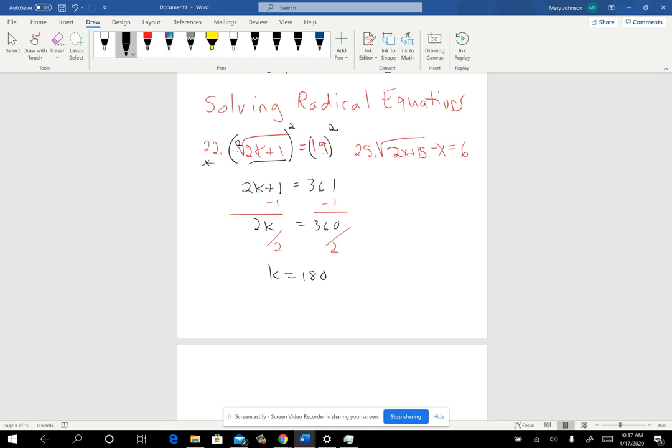Now, we do need to check these to make sure, because that may or may not work in the original. Radical equations have an issue with something called domain, and that's something you learn about later. So you go back in, and you put in the 180, where the x was, and you see if it winds up giving you what you need. So if I put a 180 there, I get a 361. And 361, the principal square root of that, is 19. It does check. I know for sure I'm right.